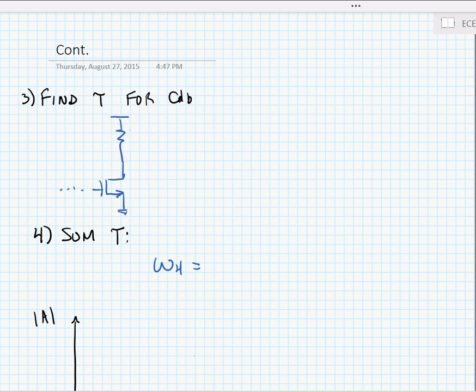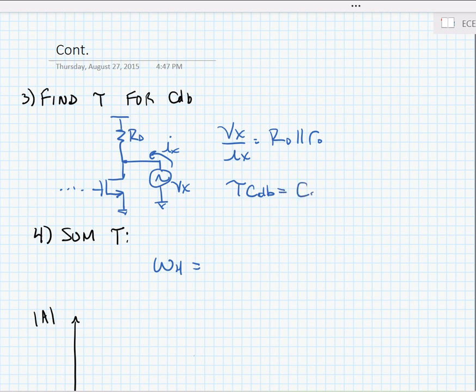Lastly, we need to find tau for CDB, so again, we'll look at the equivalent circuit. We have RD and then we have to replace the capacitance CDB. We have the current flowing through it. Here we have VX over IX is equal to RD parallel with RL of the device. We can write tau CDB is equal to CDB times RD parallel with RL.